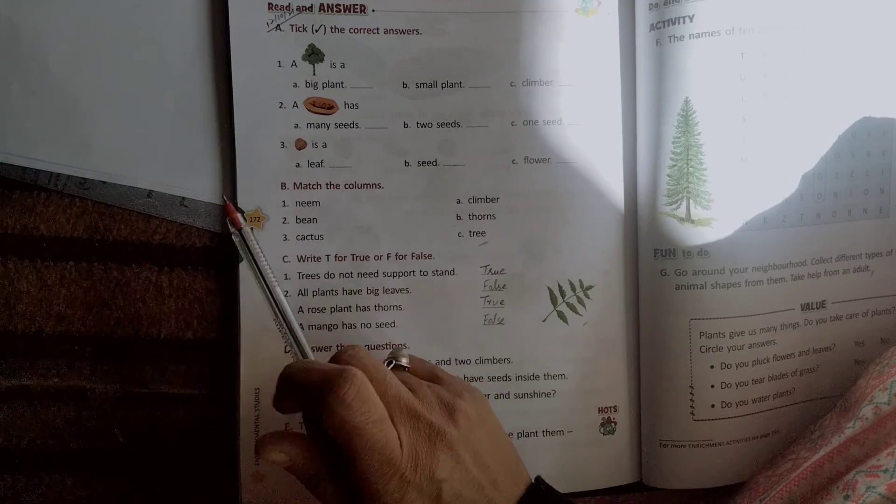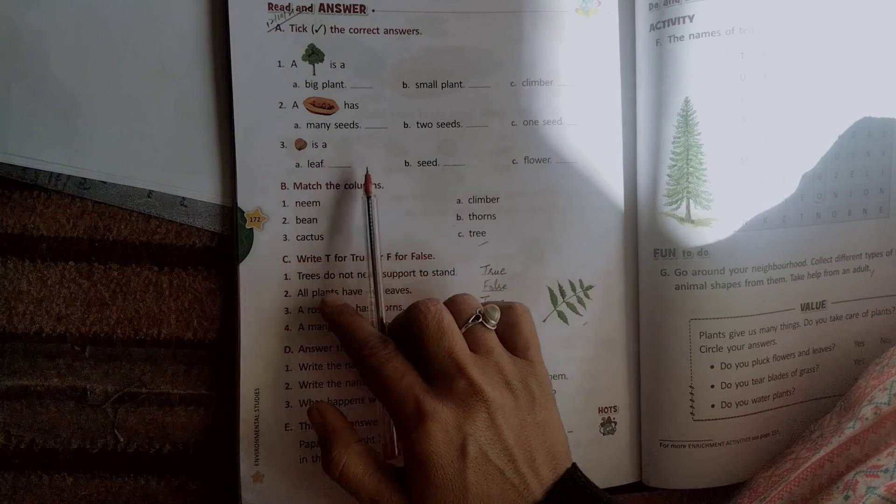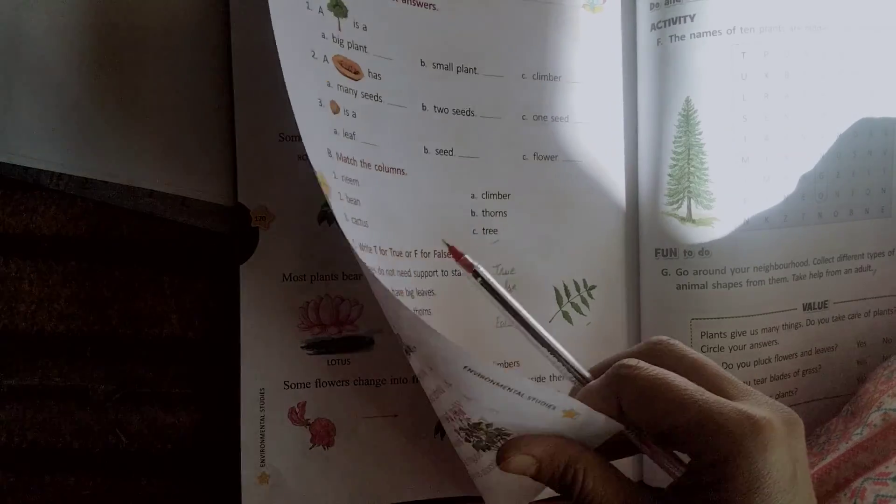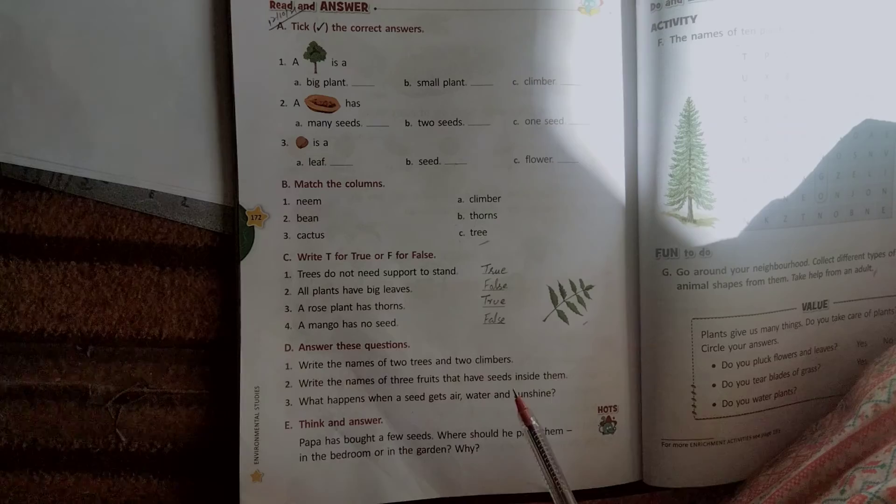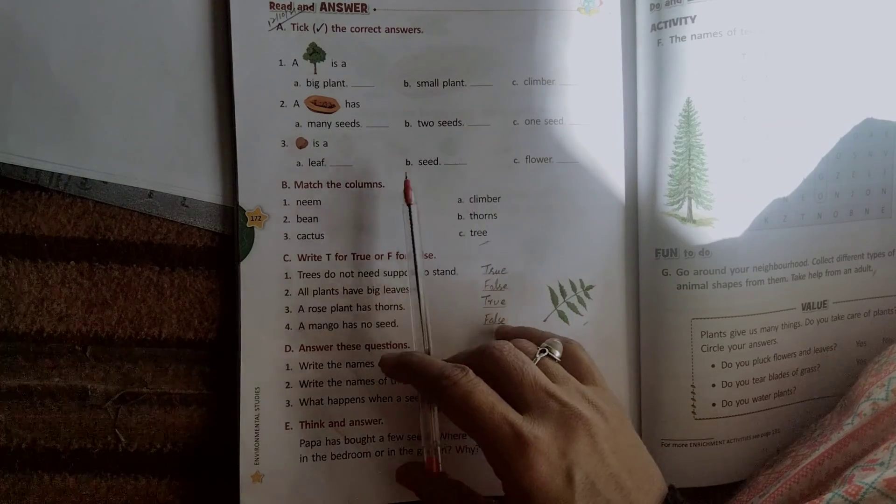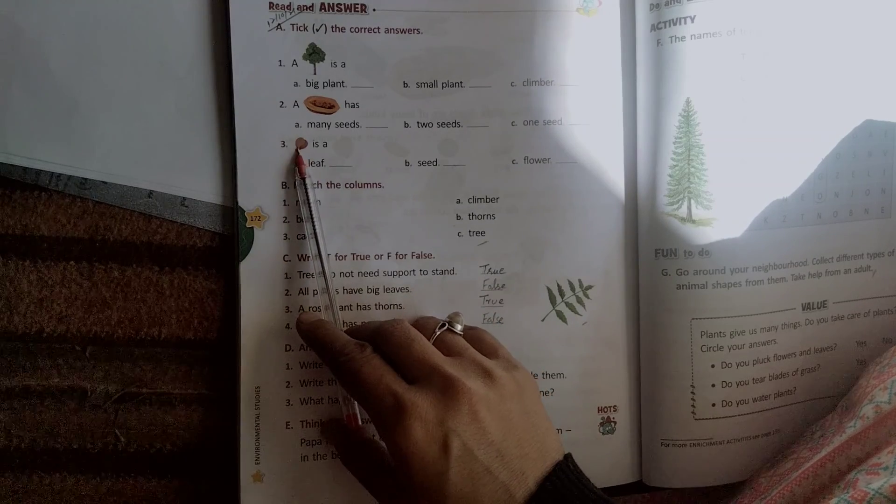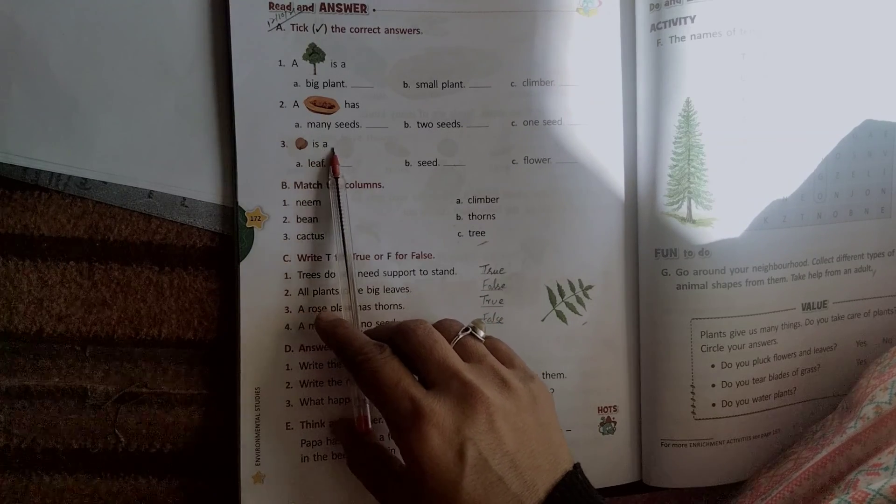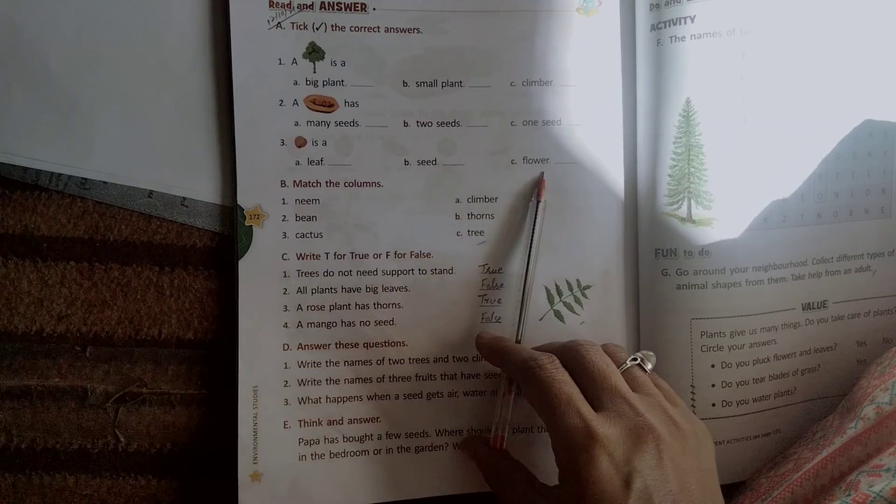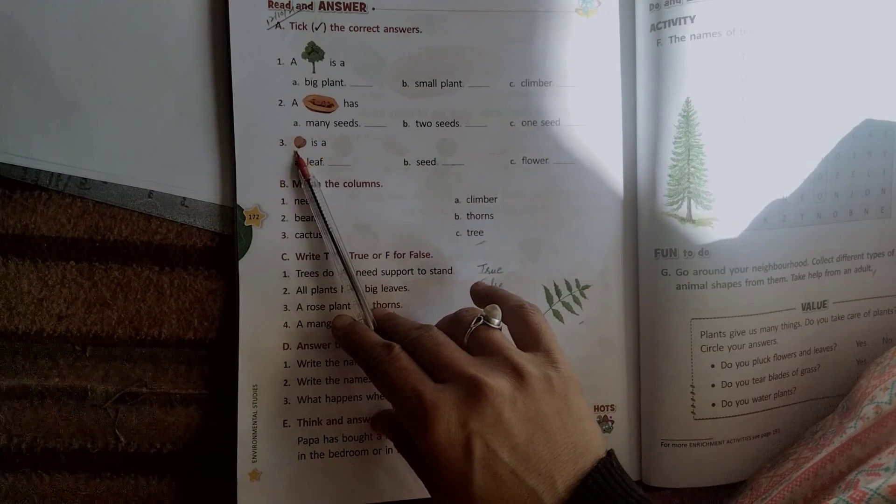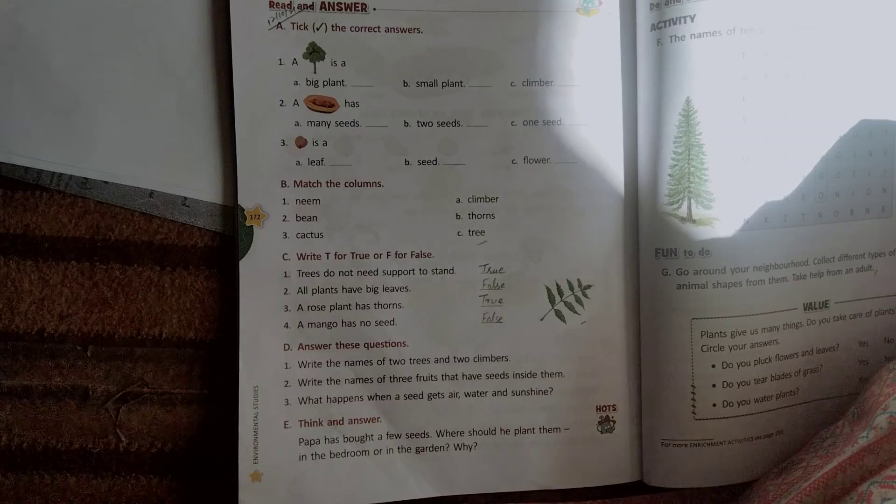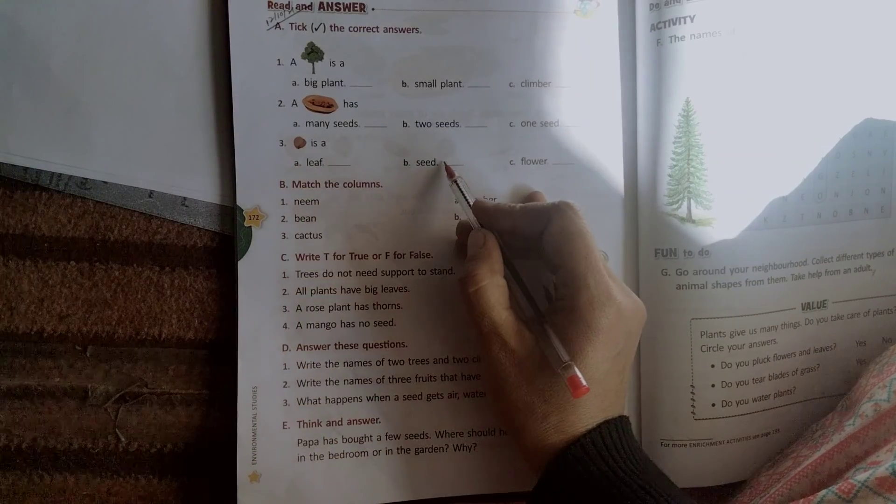Third is, what is this? Peach. Peach is a seed. This seed is a flower. See students, third is A: a leaf, a seed, or a flower. What is it? Seed. So you have to tick the seed.